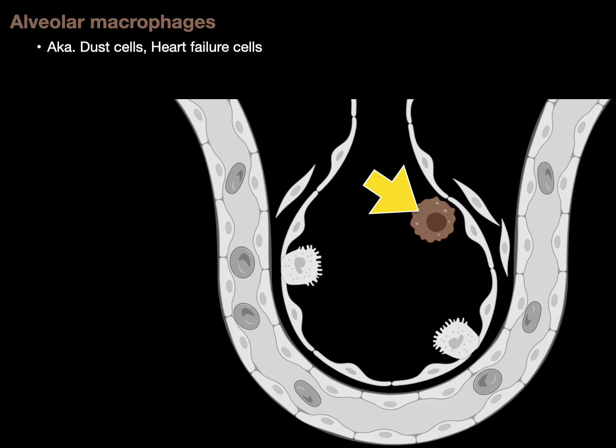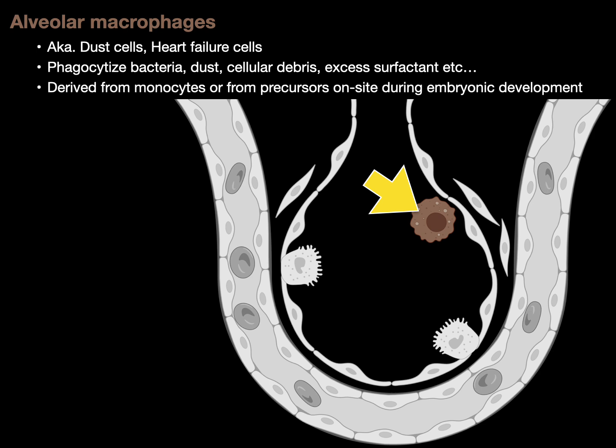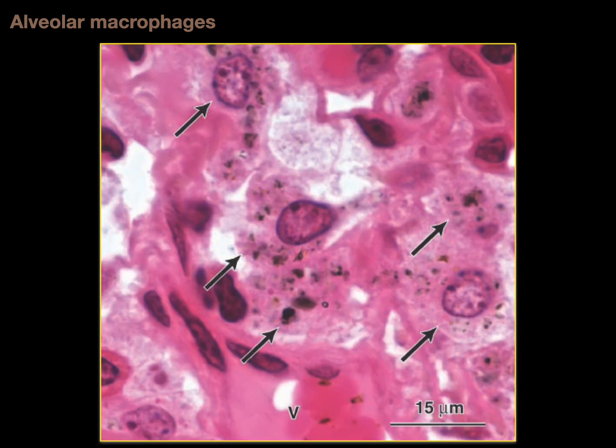Alveolar macrophages, also known as dust cells or heart failure cells, phagocytize bacteria, dust, cellular debris, excess surfactant, etc. They're derived from monocytes or from precursors on site during embryonic development. This light micrograph shows five different alveolar macrophages — and you look at those and say, hey, it looks like there's dust in them, which is why they're also called dust cells.